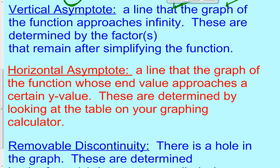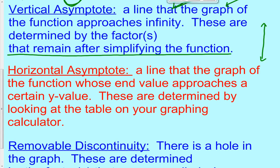You have vertical asymptotes — vertical means up and down. It's a line that the graph of the function approaches infinity. These are determined by the factors that remain after simplifying the function. It's a vertical line that the graph approaches but never crosses. It might look like the graph increases really fast but never goes across that vertical line.